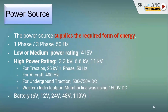The power source supplies the required power or energy in the required form — it can be AC or DC. For AC, it can be single-phase or three-phase with different frequency ranges; we generally use 50 Hz while other countries use 60 Hz. There can be low or medium power ratings, or high power ratings like 3.3 kV, 6.6 kV, or 11 kV.